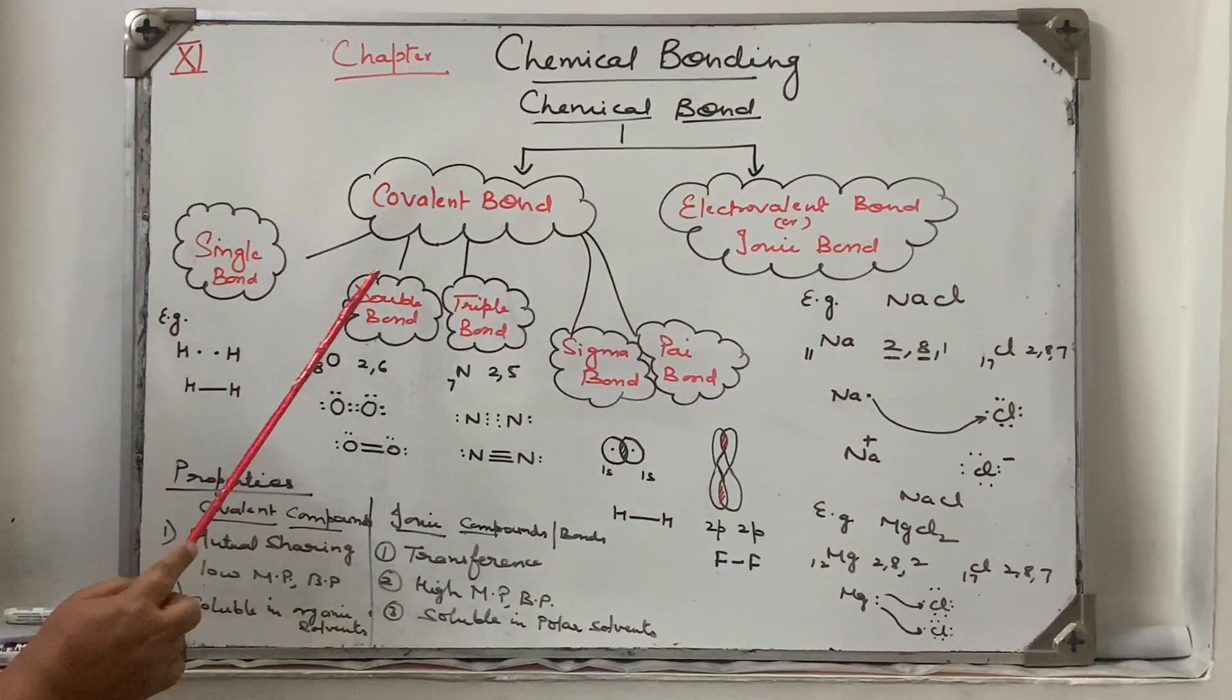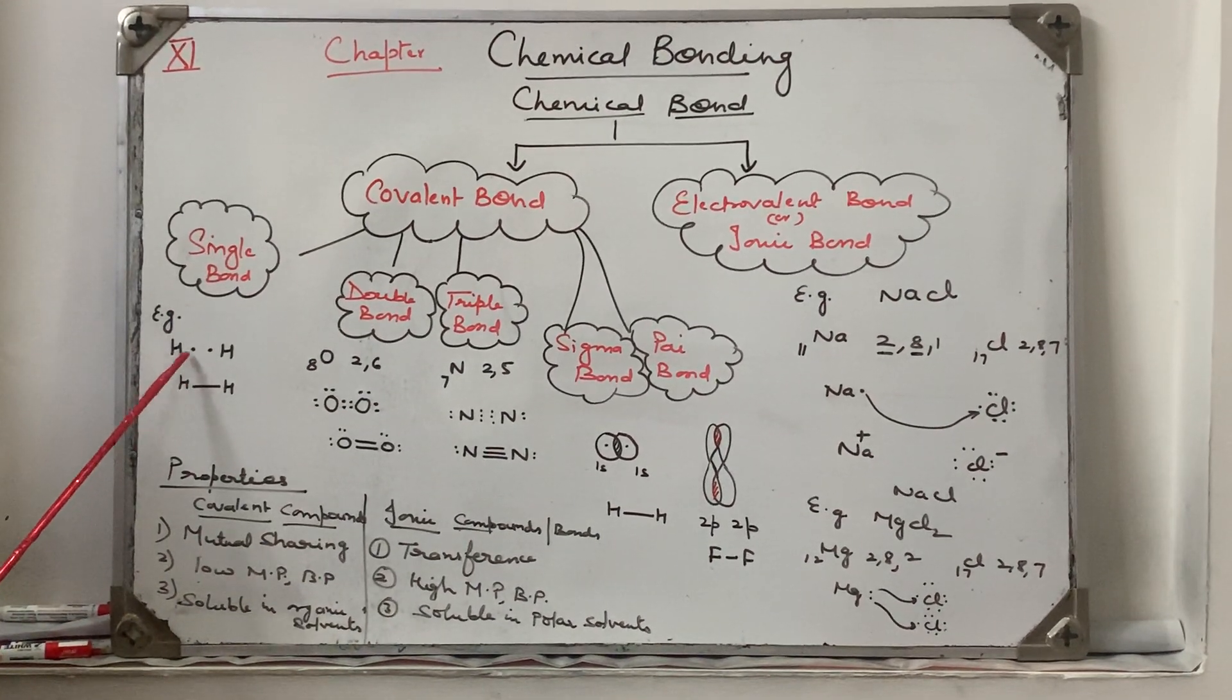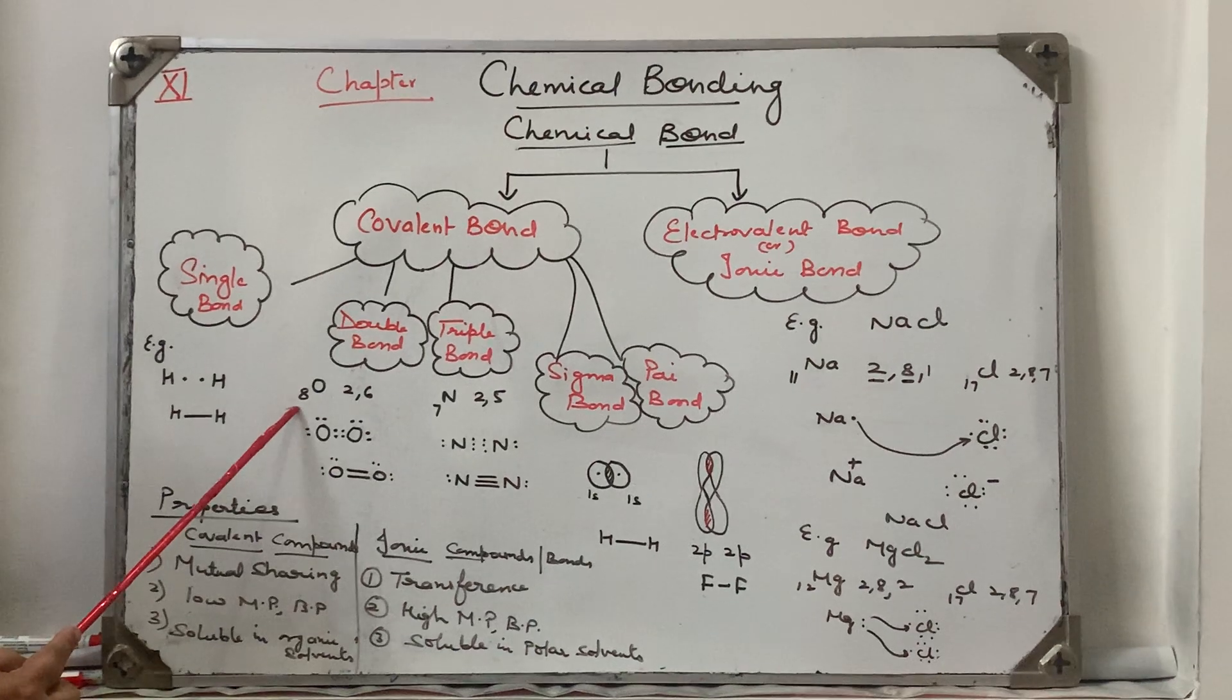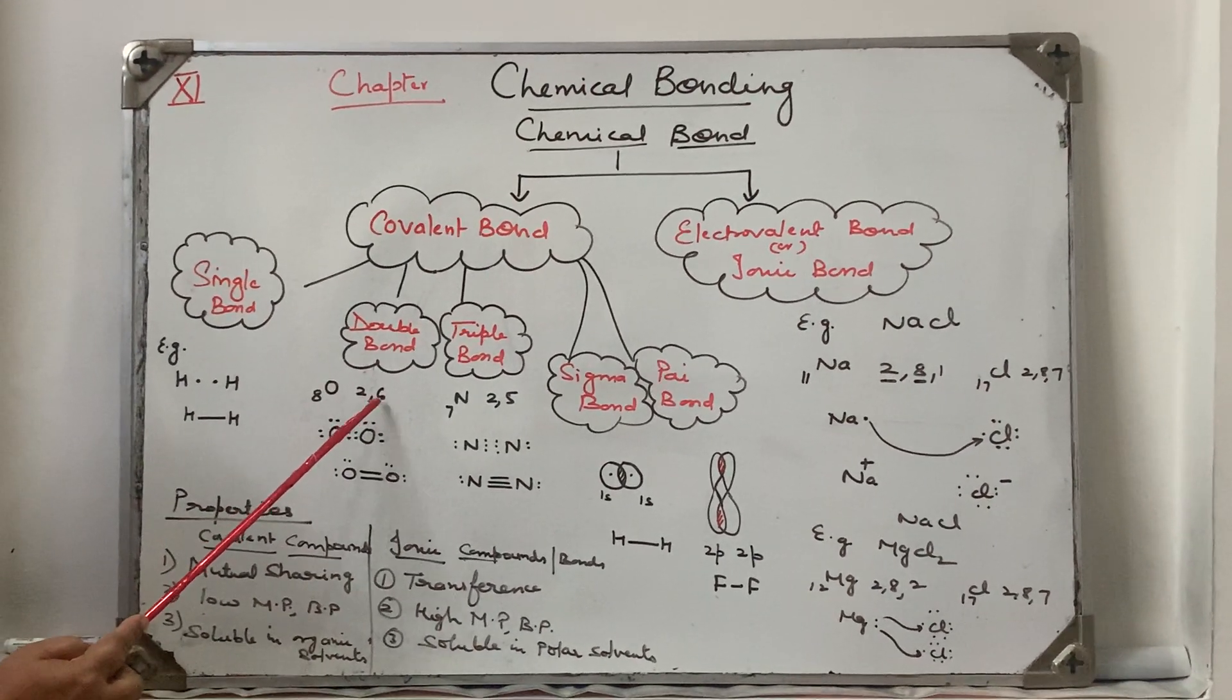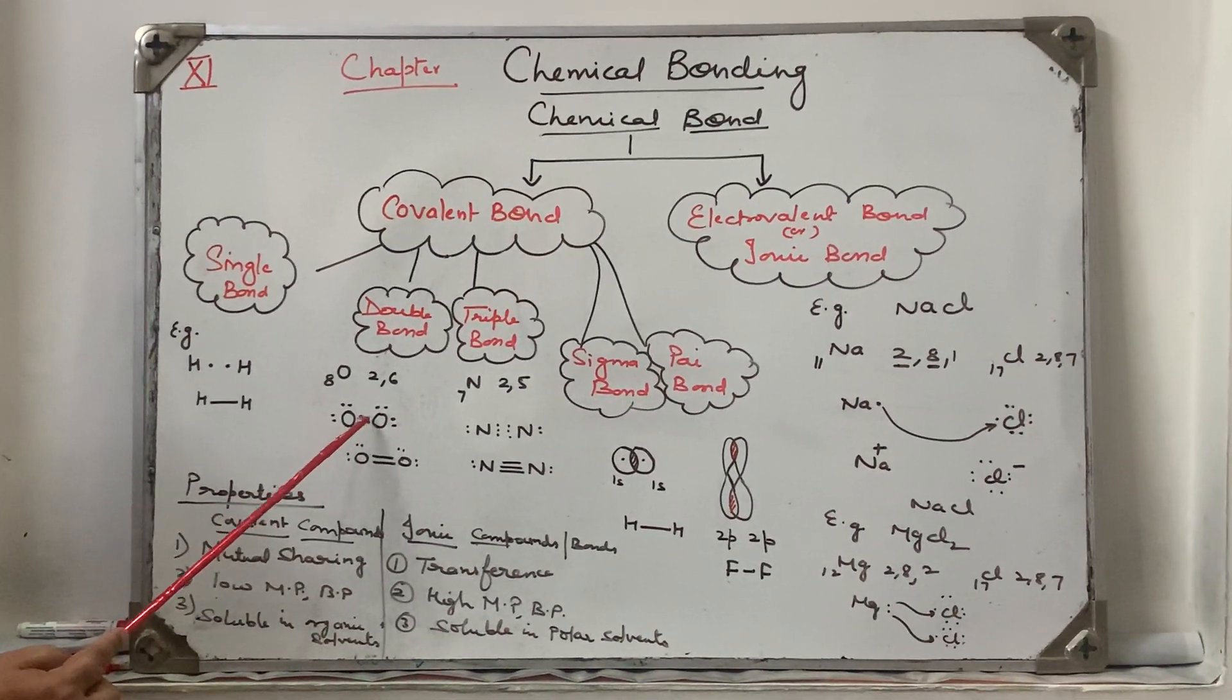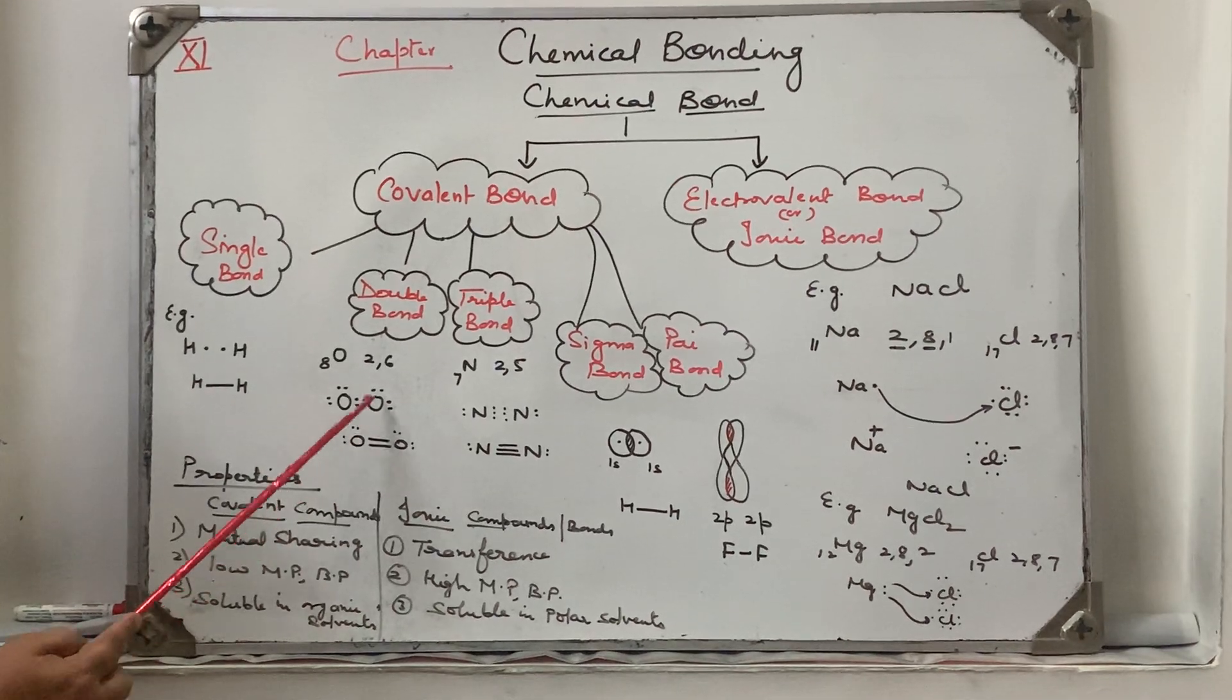Depending on the number of electrons shared. For example, hydrogen is having only one electron in one s orbital, so it will contribute one. Another is contributed by the other hydrogen, so a single bond is formed. Oxygen is having eight electrons, atomic number 8, so configuration is 2,6. It is short of two electrons, so it will share two. Another oxygen atom shares two electrons. So by sharing of two electrons one bond is formed. Four electrons are shared, how many bonds? Two bonds. So this is an example of a double bond.